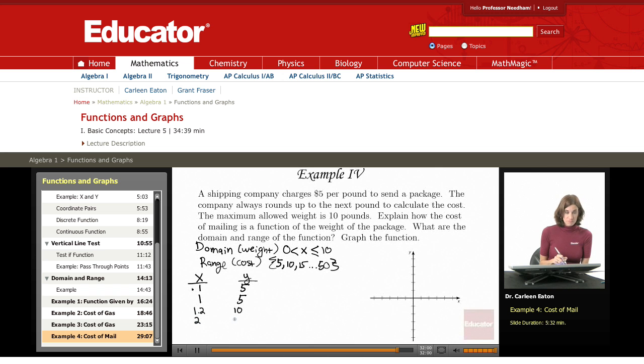If I have 2 pounds, $10. If I have 2.3, they're going to round it up, $15. And on up, let's say I have 9.8, they're going to round it up to 10 and charge me $50.